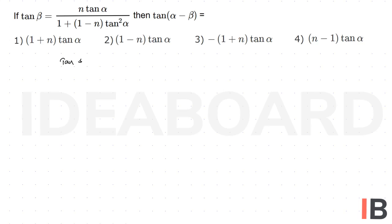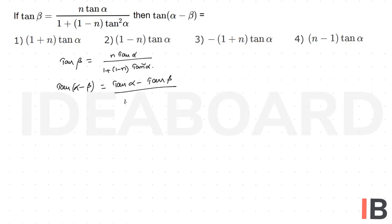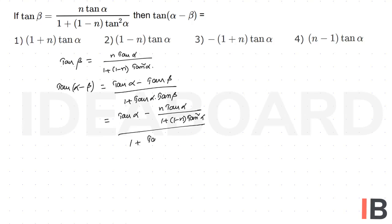Given tan β equals n·tan α divided by 1 plus (1 minus n)·tan²α. Find tan(α minus β), which equals tan α minus tan β divided by 1 plus tan α·tan β. Substitute the value of tan β: tan α minus n·tan α divided by 1 plus (1 minus n)·tan²α, all divided by 1 plus tan α·n·tan α divided by 1 plus (1 minus n)·tan²α.